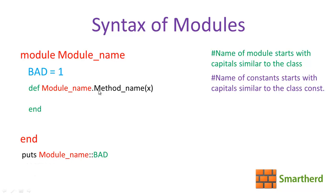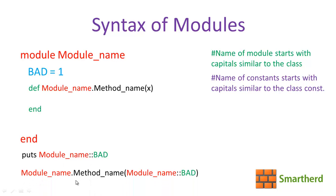Next, how to access a method from outside the module — just like we accessed the constant? The syntax is: module name, dot operator, then the method name, followed by the parameter in parentheses. For example: ModuleName.method_name(ModuleName::CONST). We are passing the constant value, which is 1, to the variable x inside the method.